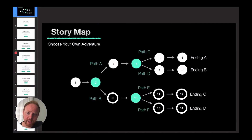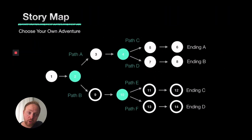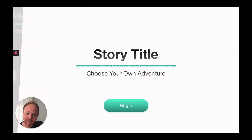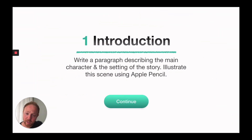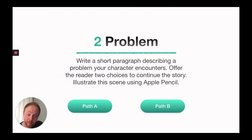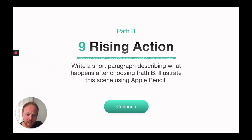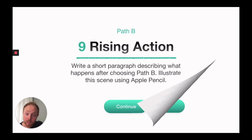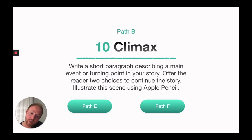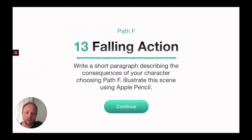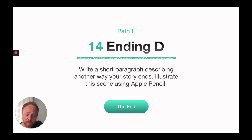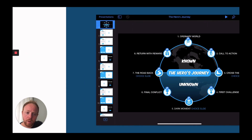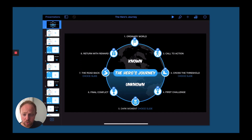Some English teachers were asking me about remote learning resources for English classes, so I've put some cool English resources here. Number one is the 'Create Your Own Adventure' or 'Choose Your Own Adventure' story in Keynote. Students think of a story title, record or write a paragraph for each part of the narrative, insert Path A and Path B, and think of alternate endings, drawing each scene. It goes through the rising action, the climax — where students write alternate parts of the story — and then the falling action and ending.